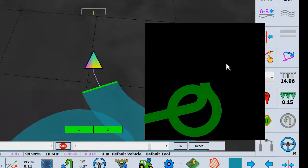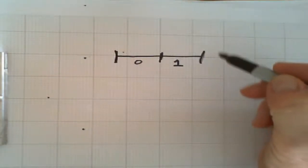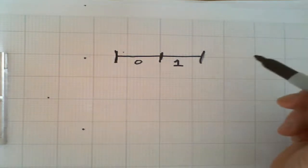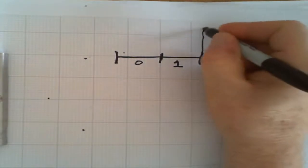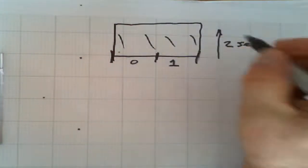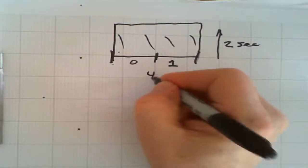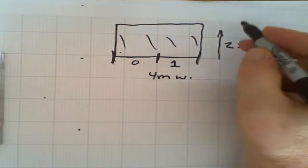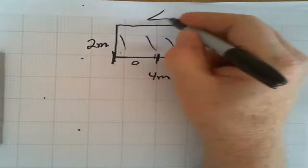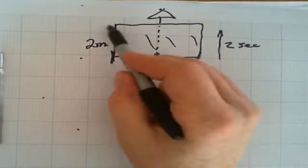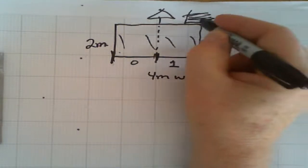Here we have that same two-section tool. If we're traveling at three and a half kilometers per hour — which is coincidentally one meter per second — and our look-ahead is two seconds, then we should look forward two meters. That becomes our read pixel buffer. If the tool is four meters wide and we're two seconds ahead, two seconds times one meter per second gives us two meters forward. What we're looking at is this two-meter by four-meter square, looking for pixels in the applied area as they come up.